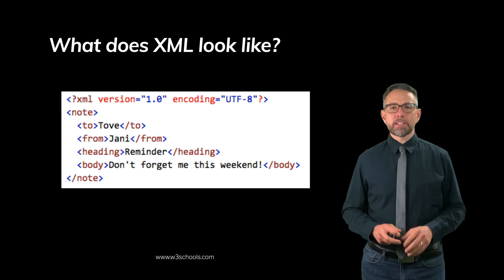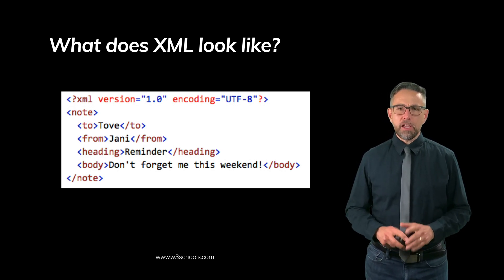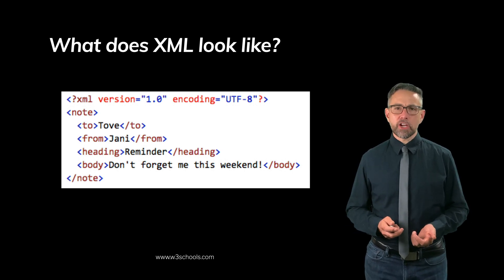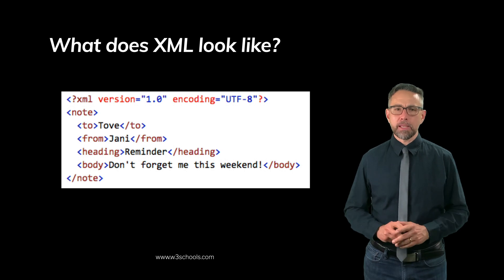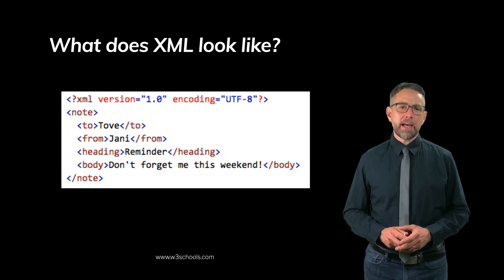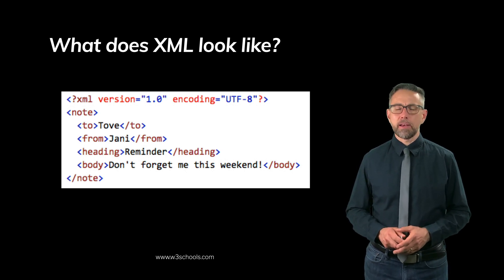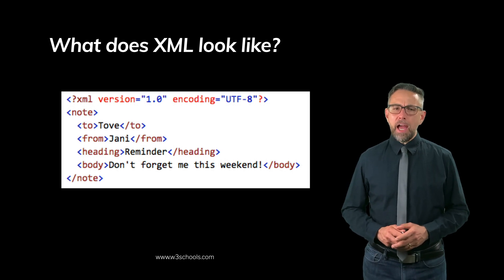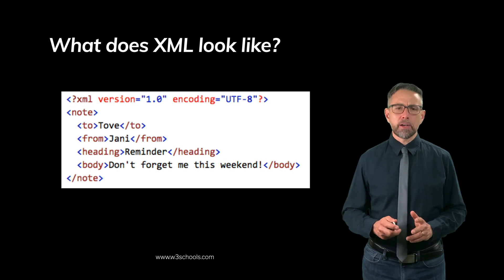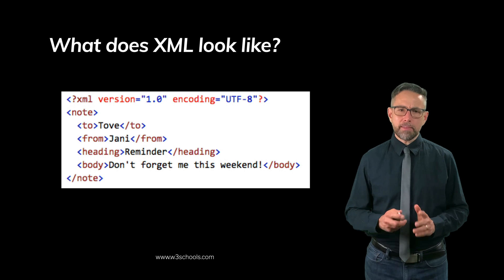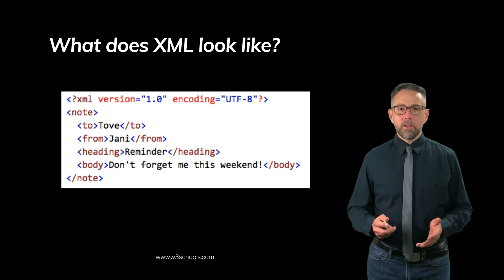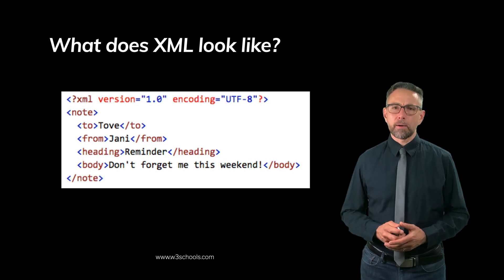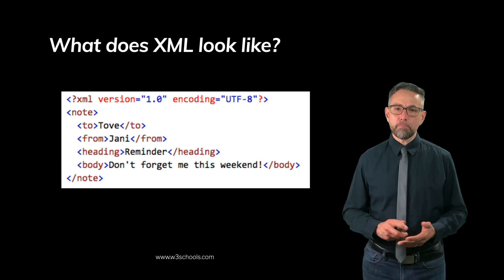Let's look at a short snippet of XML to give you a sense of what it looks like. The color in this XML document is just added by the text editor — it's not part of the language. Looking at it, you get the sense it represents some kind of message, maybe an instant message or email. You can see there's a note with fields for 'to,' 'from,' and 'heading.' By reading the XML as a human, you get a sense of what's going on — enough to understand the gist and probably enough to edit it.